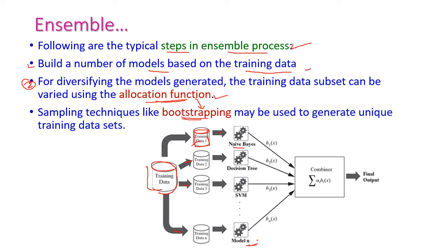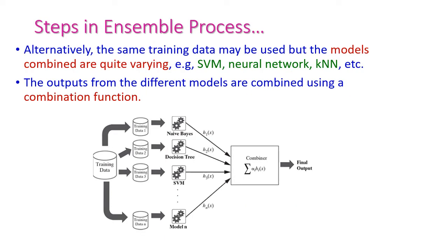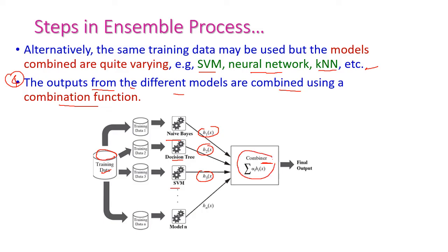For the allocation function we can use bootstrapping — if training data is very small, bootstrapping is used to generate unique training datasets for all models. Alternatively, we can use the same training data for all models, since outputs will differ anyway. The fourth step is combining the outputs of different models using a combiner function to get the final output, which will be improved compared to any single model.